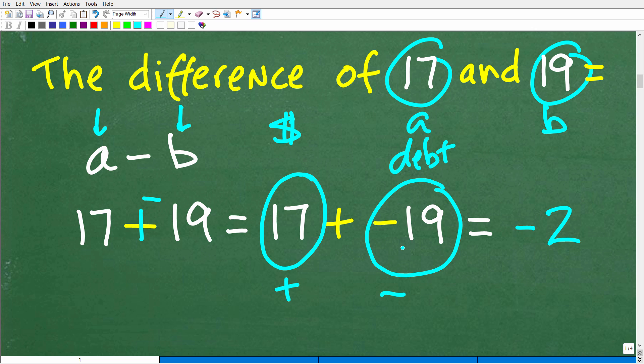Now negative numbers is like you having debt. Alright, now if you owe someone $19, but you have only $17, what's your financial situation? Well, this person is going to come up to you and they're going to say, hey, give me my $19 back. You're going to say, listen, I don't have $19, but I'll give you my $17, but I still owe you $2.